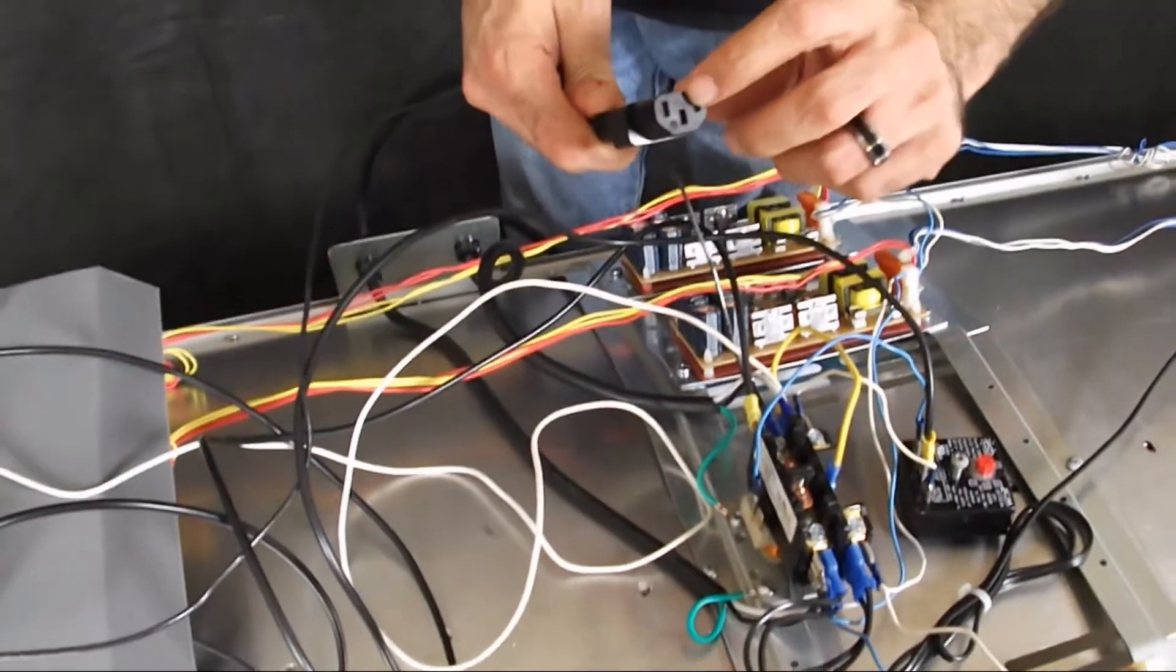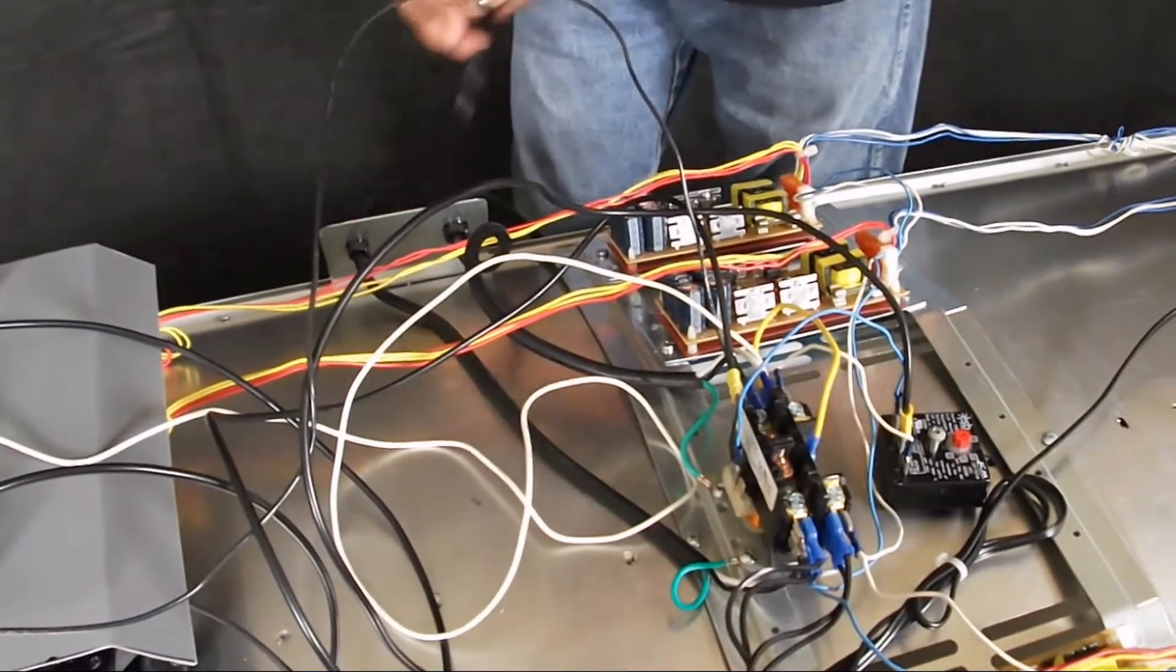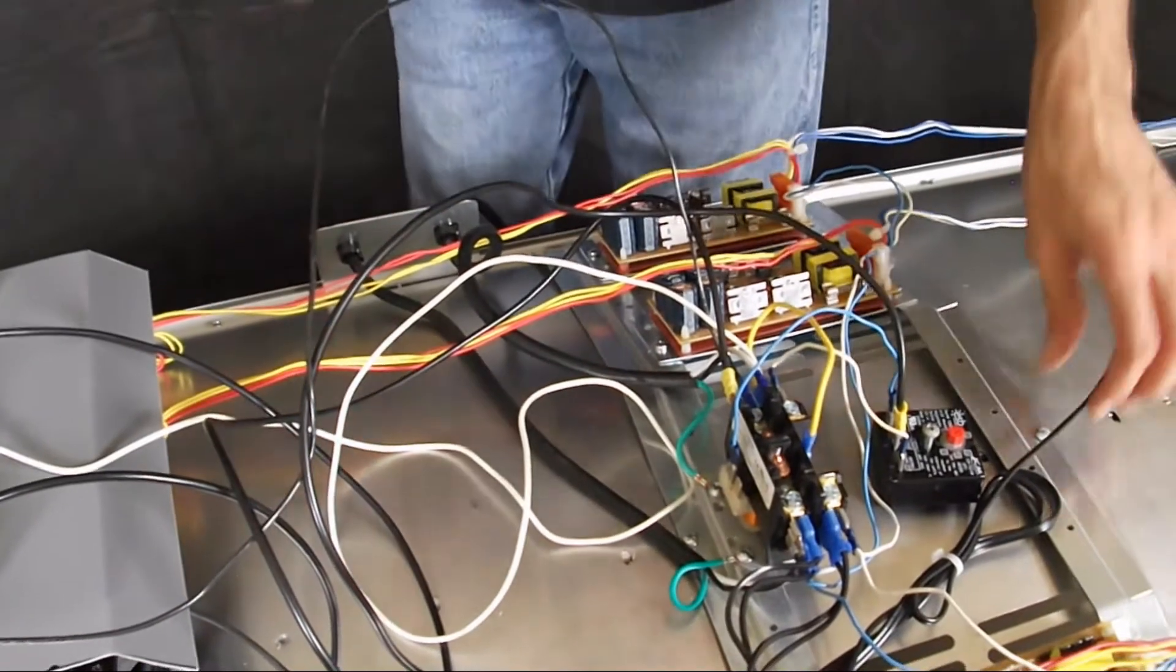So this is just a hot, a ground, and a neutral that goes down to your bench to provide power to everything in your bench.